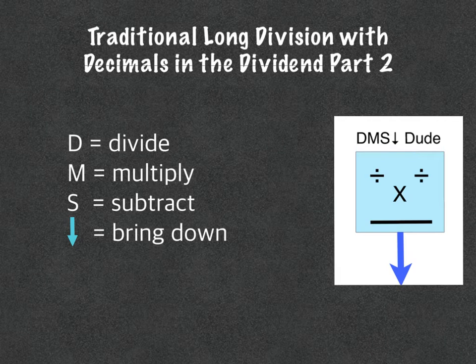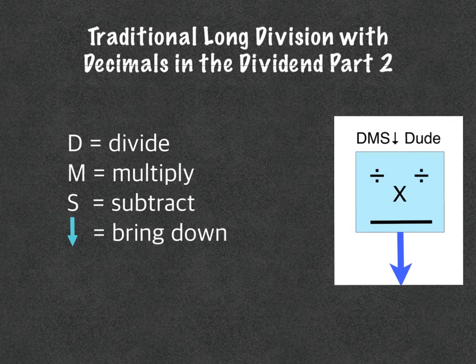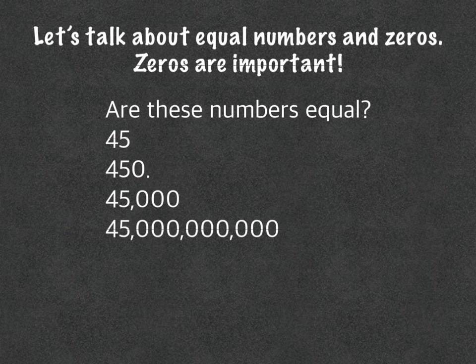So we've got divide, multiply, subtract, and bring down as our normal traditional algorithm steps, and then we're also going to use our decimal elevator, and we're going to talk a little bit about zeros here to kick this off.